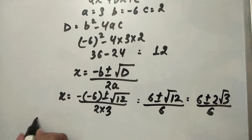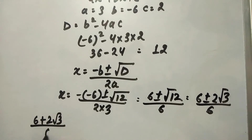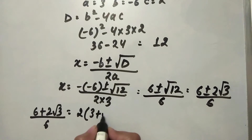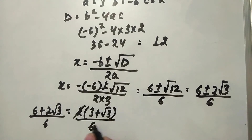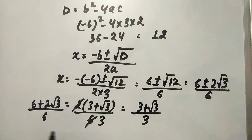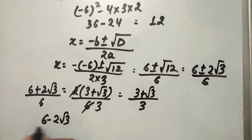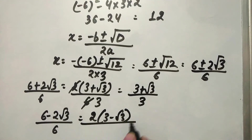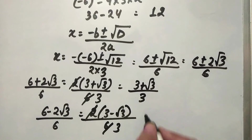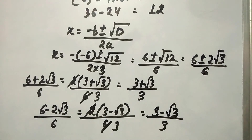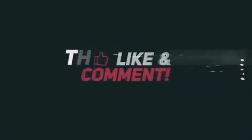Taking 6 plus 2 root 3 upon 6, one root value is equal to 3 plus root 3 upon 3. Don't forget to subscribe to this channel.